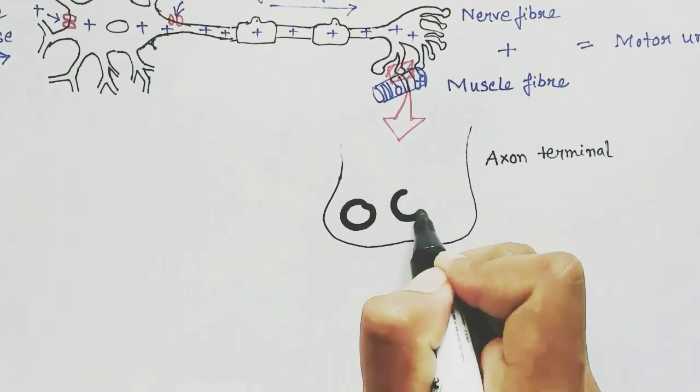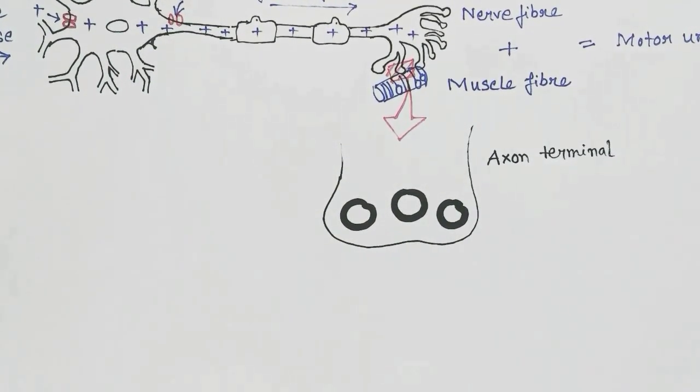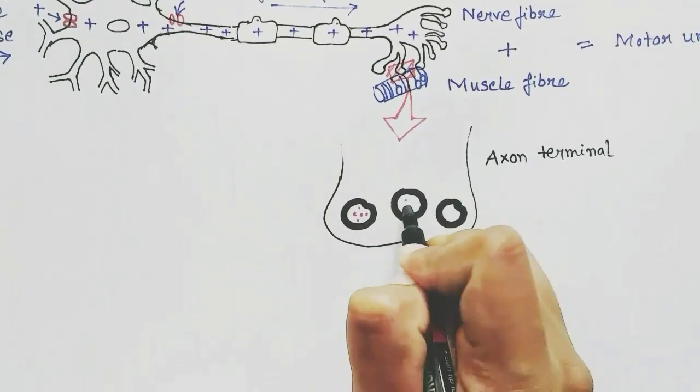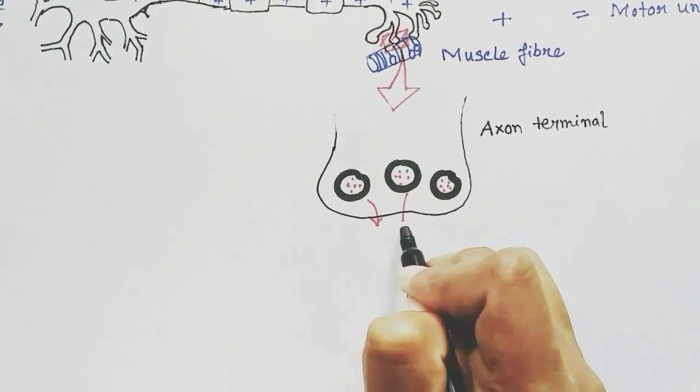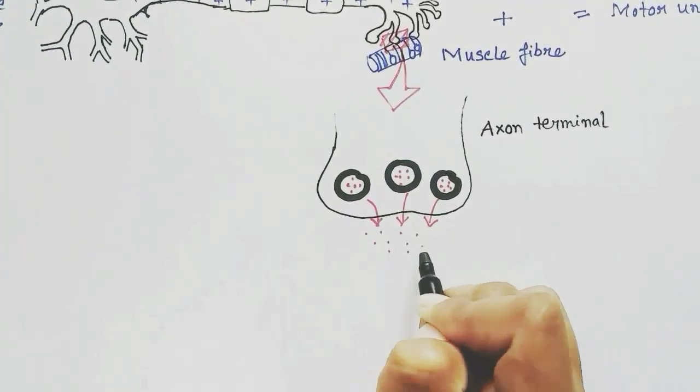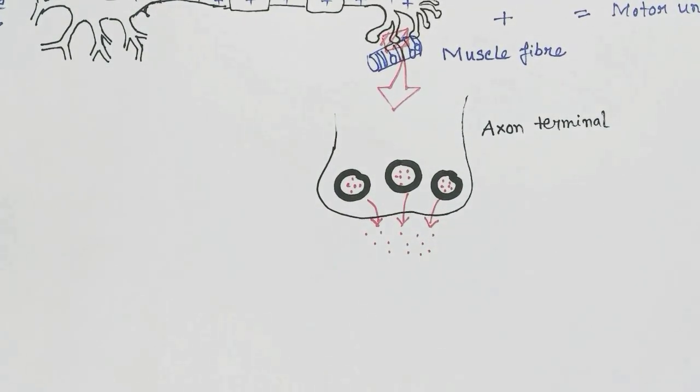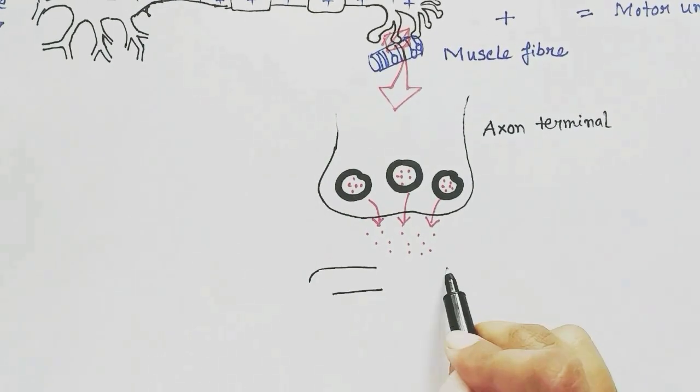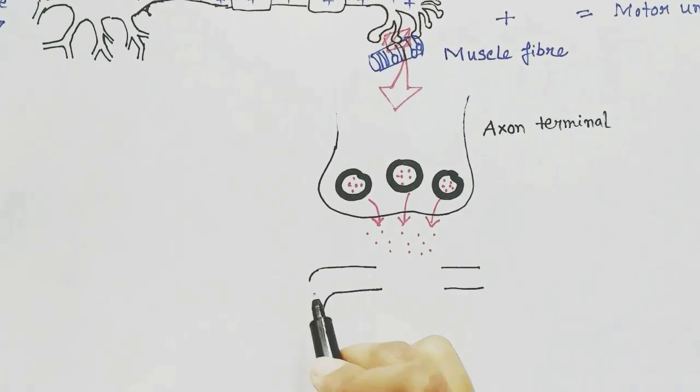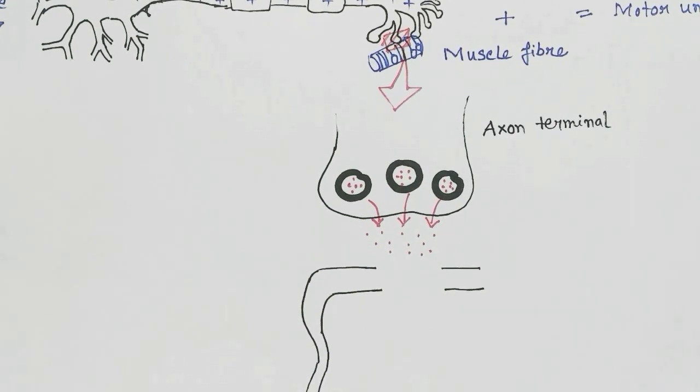This is the axon terminal, and it has vesicles containing acetylcholine, which is a neurotransmitter. It releases the acetylcholine as the action potential arrives. It is released in the neuromuscular junction, the junction between the muscle and the neuron. I am drawing the muscle structure here.